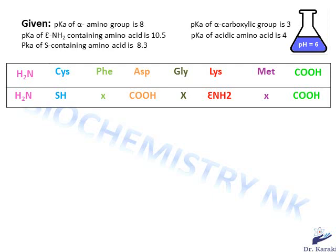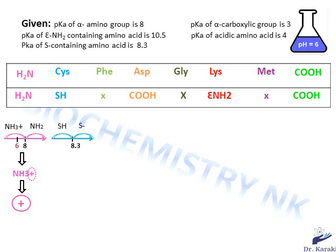After that, you have to determine the ionization state of each group at pH 6. Let's start with the terminal NH2: draw an axis, put the pKa equal to 8 in the middle. If the pH is lower than 8, the protonated form NH3+ predominates; if it's higher, the deprotonated form NH2 predominates. At pH 6, which is lower than 8, NH3+ predominates. To determine the charge, we look at the sign — here we have a positive sign, so the charge is positive.